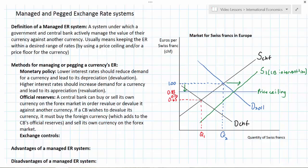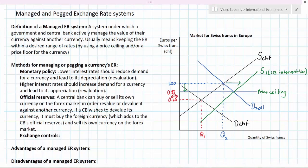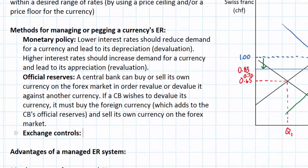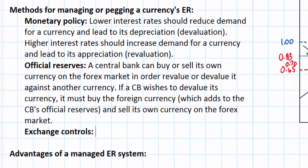There is one more tool that a government can actually use to try to maintain the value of its currency against another currency within a certain range. The third tool at a government's disposal for maintaining the value of its currency in the foreign exchange market is exchange controls.